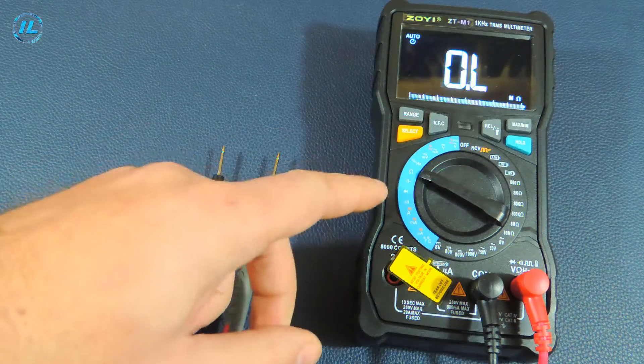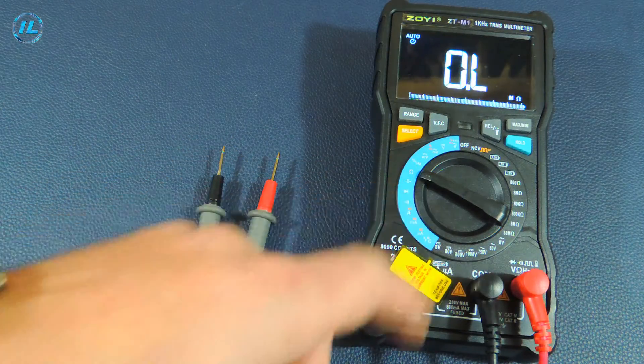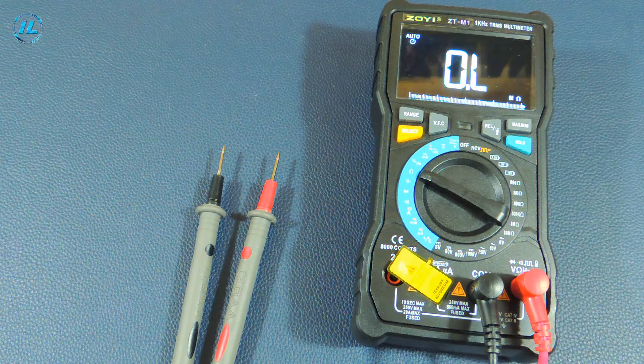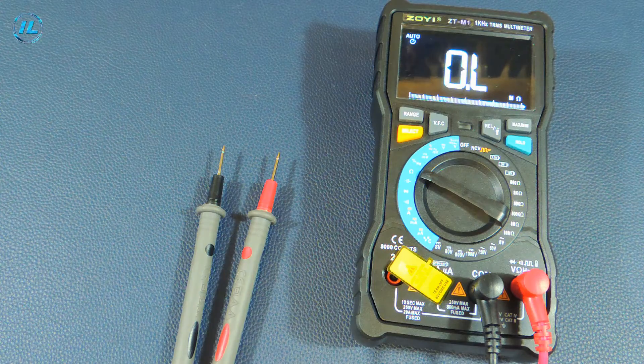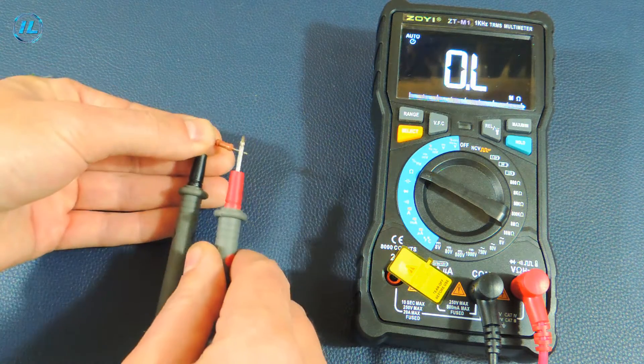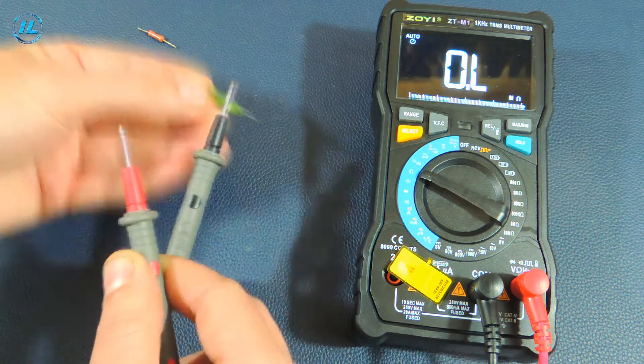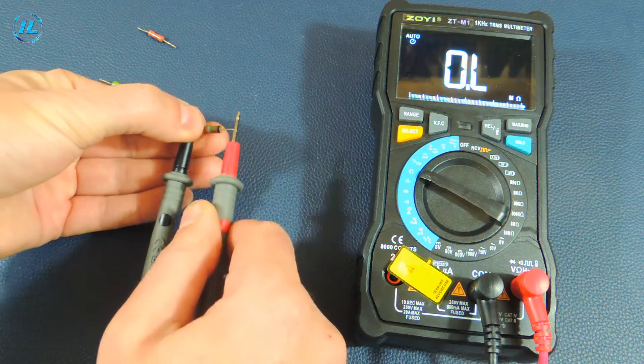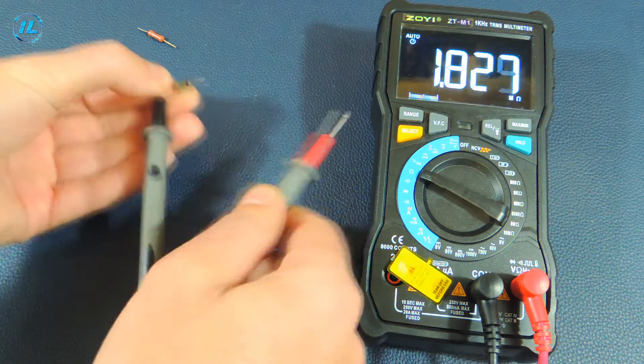The next point is the measurement of resistance. When manually selecting the measuring range, the multimeter coped with this function perfectly. I'll check the automatic mode now. 10 ohms. 200 kilo ohms. 1.8 megaohms. Great, fast and accurate.